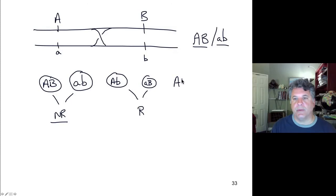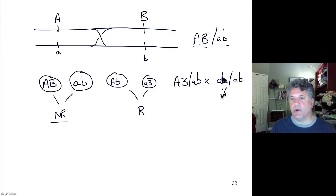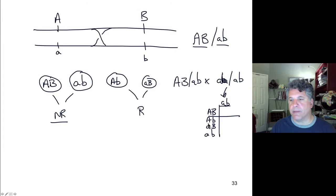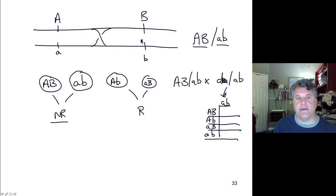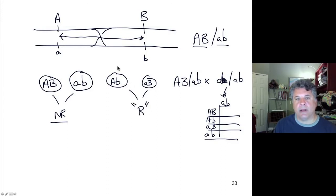Again, by crossing this individual — big A big B over little a little b — to a tester stock little a little b over little a little b, the tester produces only little a little b gametes. The dihybrid produces four gamete types: big A big B, little a little b, big A little b, and little a big B. Because these genes are on the same chromosome and less than 50 map units apart, the distance between them is reflected in the frequency of recombinant gametes produced.